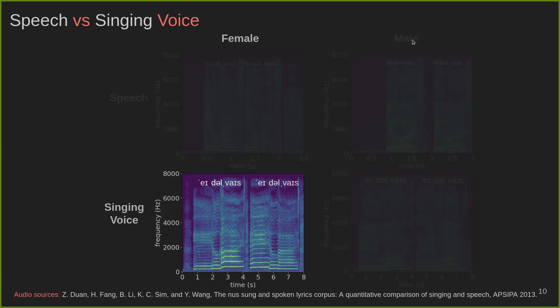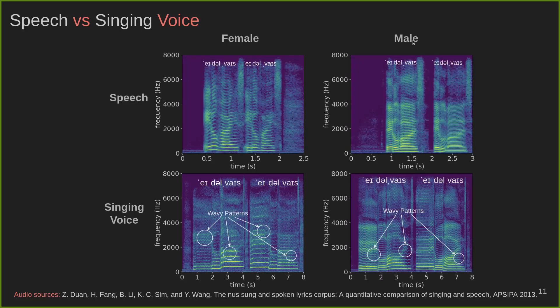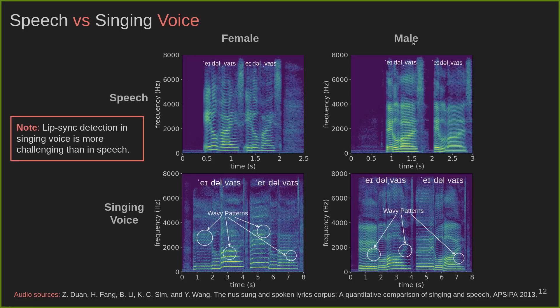We can see the special wavy patterns in the singing voice spectrograms which are not significant in speech. These wavy patterns are associated with a musical ornamentation element called vibrato, typical of singing voice in the regions where vowels are sustained. The presence of sustained phonemes in singing voice makes it harder to detect lip synchronization than in speech.